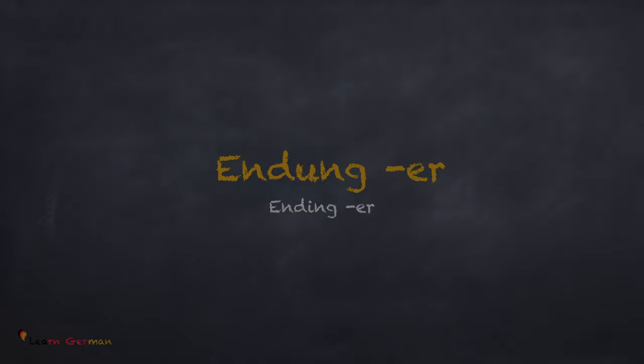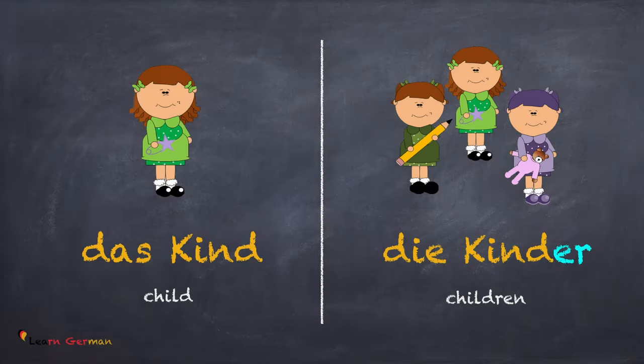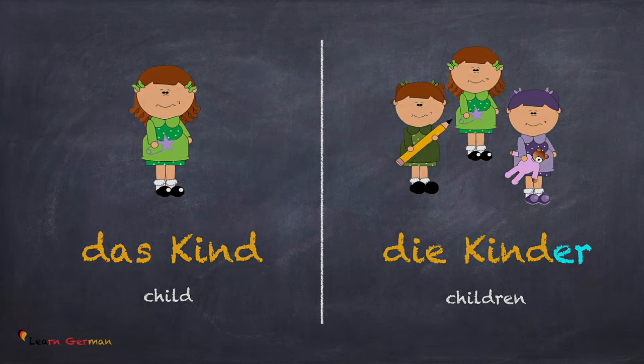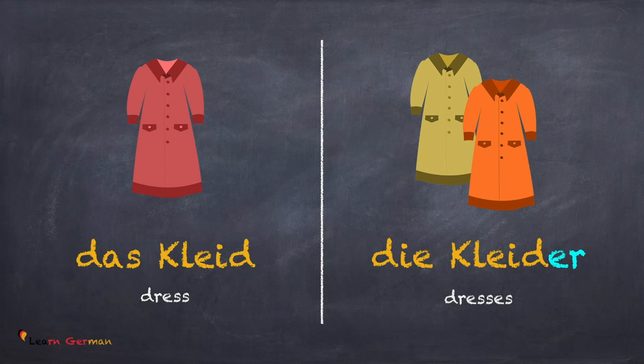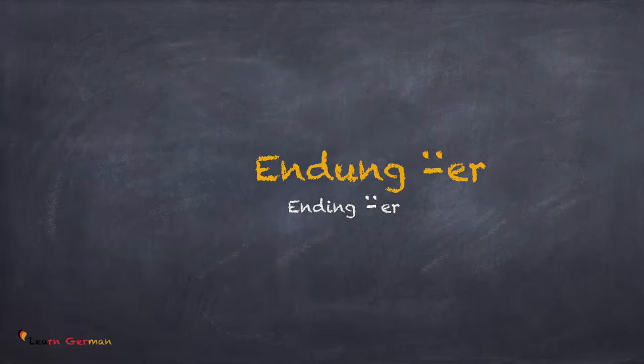Endung ER. Das Kind — Die Kinder. Let's take another example: Das Kleid — Die Kleider. As you can see in these two examples, for some words only an ER is added at the end to make the plural.